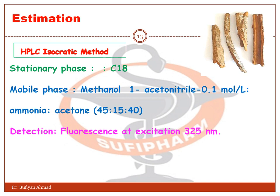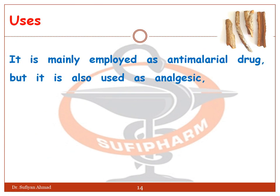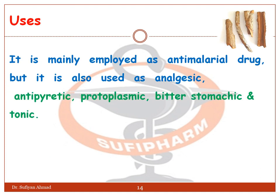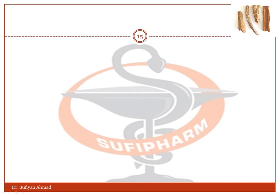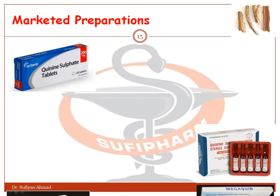Detection by fluorescence at excitation 325 nm and emission 375 nm. Uses: quinine is generally used as an anti-malarial drug, but is also used as analgesic, antipyretic, antiprotozoal, bitter stomachic, and tonic. Quinidine is a cardiac depressant, and cinchonidine is used in rheumatism and neuralgia.